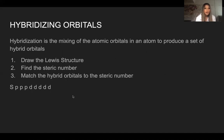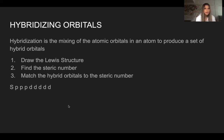Hybridization is the mixing of atomic orbitals in an atom to produce a set of hybrid orbitals. First, we need to draw the Lewis structure and then find the steric number. With the steric number we can find the electron geometry, and with the Lewis structure we can find the molecular geometry of each molecule. Then we match the hybrid orbitals to their steric number. The available orbitals are S, P, P, P, and D, D, D, D, D, D orbitals.